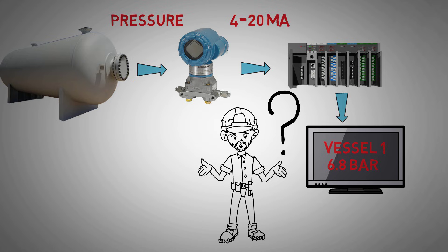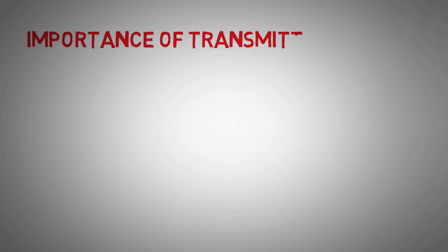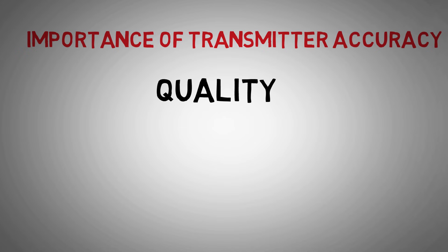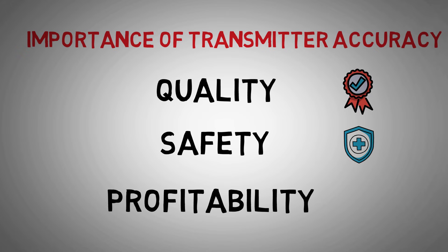What makes him trust that this instrumentation is accurate and reliable? In many process industries, the precision of process variables instrumentation is measuring is extremely important for quality of the product that has been created, the safety of people and equipment, and for the profitability of the business. Regular calibration of the instrumentation is what gives us this confidence.